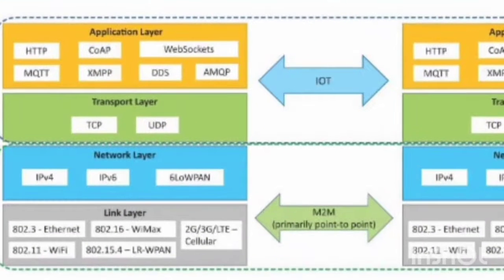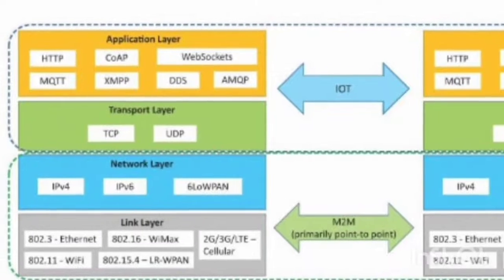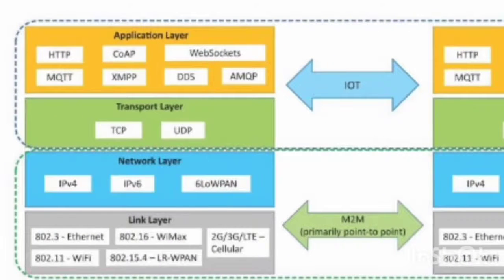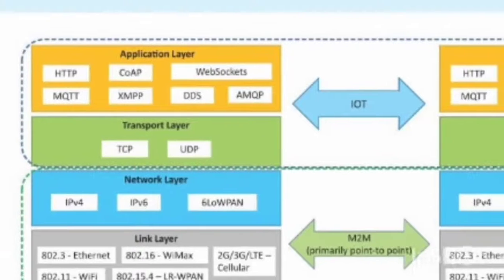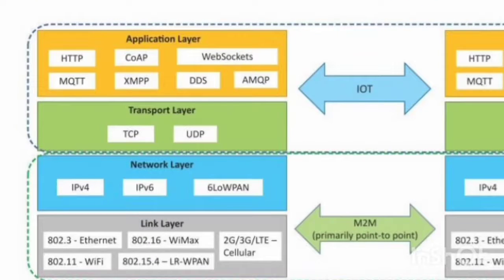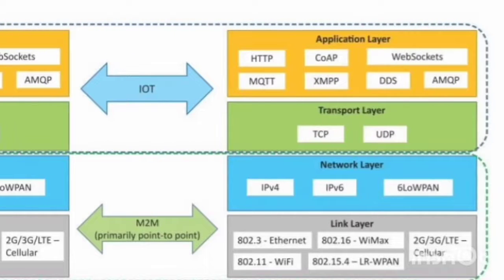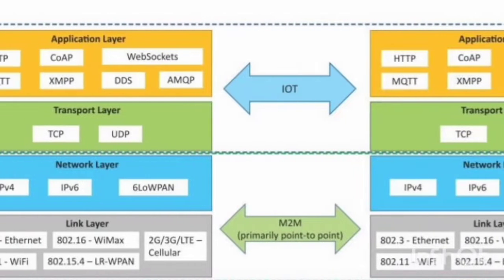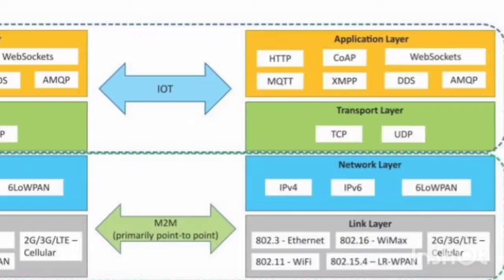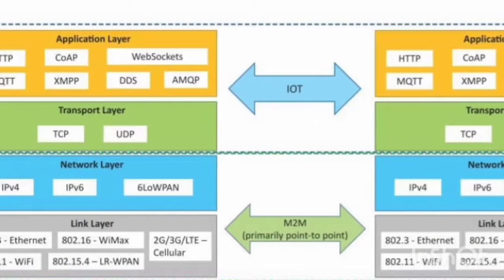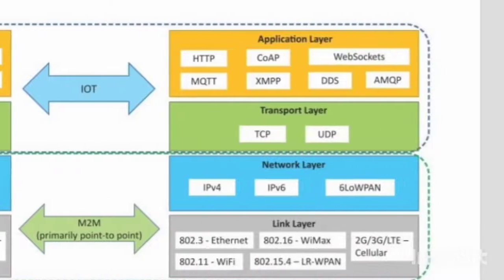Regarding communication in IoT versus M2M: as introduced in the general IoT model, there are three layers — application, transport, network, and link layer. M2M operates primarily point-to-point between the network and link layers, whereas IoT operates at the application layer level.